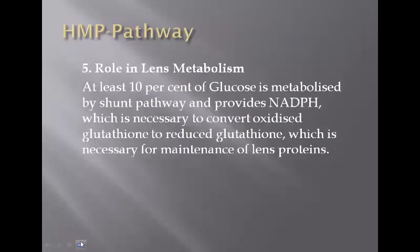Another significant role of the HMP pathway is in lens metabolism. The NADPH formed by this pathway is necessary to convert oxidized glutathione to reduced glutathione, and it is also required for the maintenance of lens protein. At least 10% of glucose is metabolized by this shunt pathway to provide NADPH.